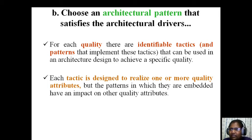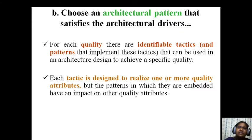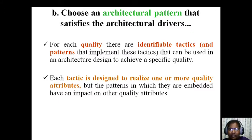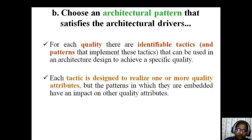What tactics do you use so that your pattern is going to be perfect? Each tactic is designed to realize one or more quality attributes — every tactic is for quality attributes only. Without these attributes, what is the use of your tactic? For architecture, what is your tactic? To get a good architecture. The ultimate drivers are quality attributes or functional attributes — from there they got requirements as a former step for architecture design.